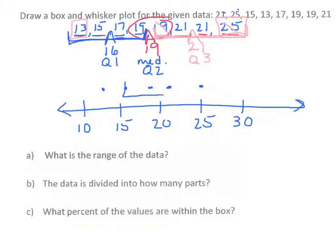Put a box around your three middle numbers. Line down your median. And put your whiskers in. Now you have your box and whisker plot.